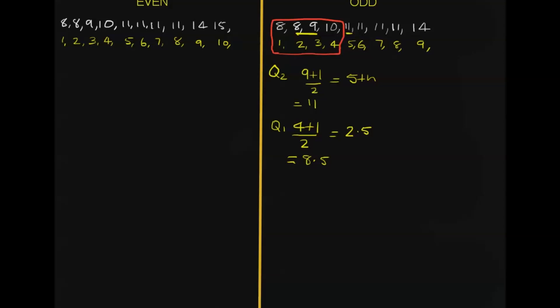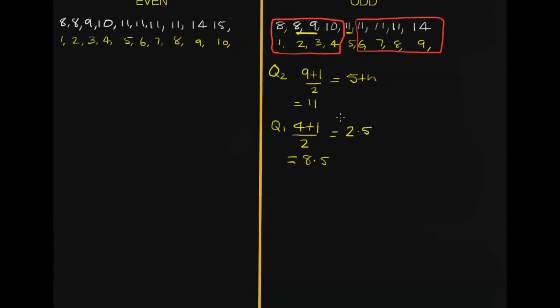Now for our upper quartile, once again, we leave the median out. And then what we do is, same deal, we've got 4 scores.